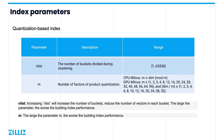Let's first take a look at the quantization-based indexes. The index divides data points into cells by clustering. When a query comes in, it is compared to the centroids of all the cells. Once this is done, a user-determined number of closest cells are selected for searching. After searching all selected cells, the results are compared and returned. The parameter nlist determines how many cells to create within an index file. The larger the nlist number, the slower the index is built. When searching, a larger nlist can result in faster searches but carries a loss in recall accuracy.